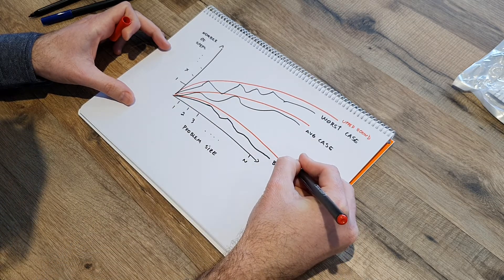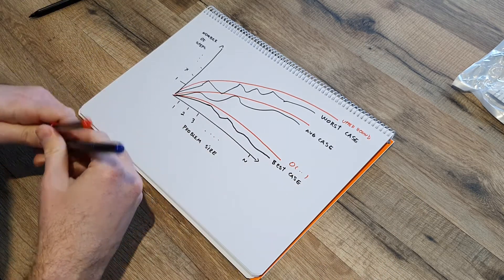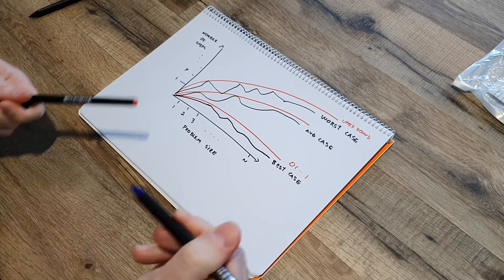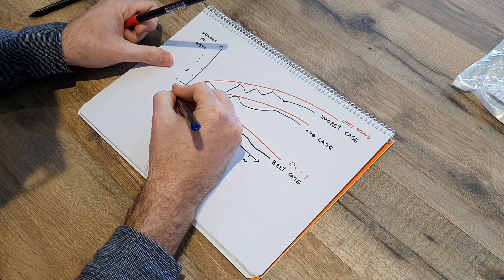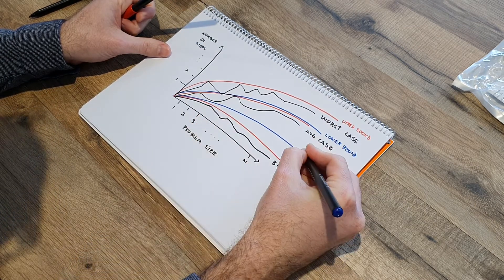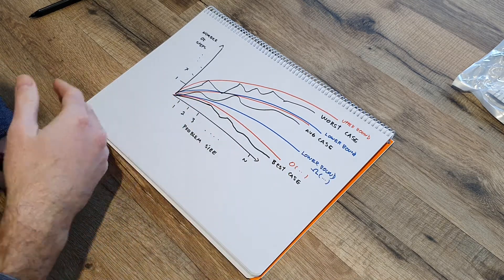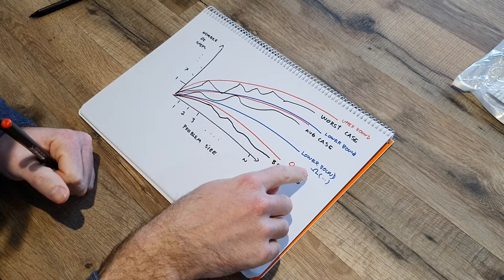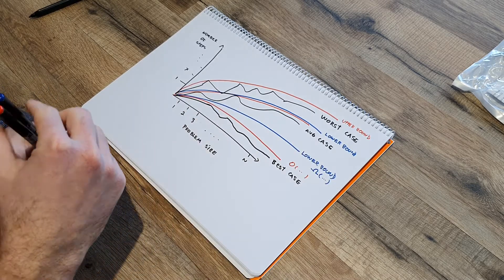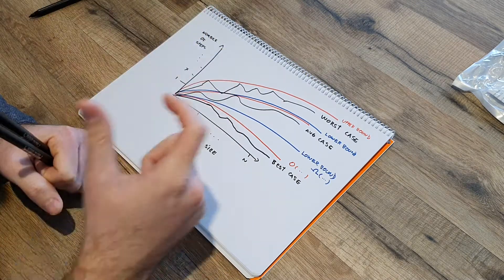Then you can get the Big O notation of that scenario. Besides Big O notation, there are also other useful notations like Big Omega or Big Theta. Big Omega would be finding instead the lower bound — the function that represents the lower bound. You can do that for each of the scenarios as well. Big Theta is basically both the upper and lower bound for the same function.